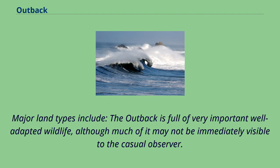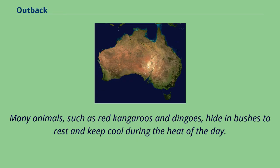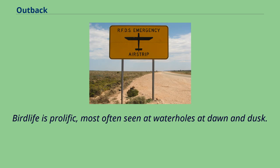The outback is full of very important well-adapted wildlife, although much of it may not be immediately visible to the casual observer. Many animals such as red kangaroos and dingoes hide in bushes to rest and keep cool during the heat of the day. Bird life is prolific, most often seen at waterholes at dawn and dusk.